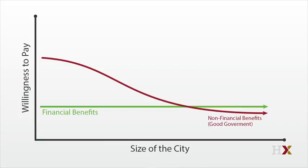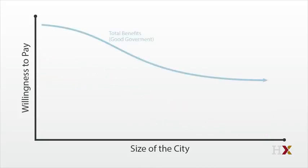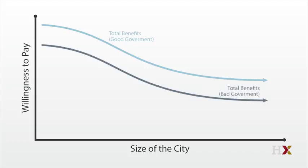So we can draw two lines for quality of life, both the same when population is low. But one line, reflecting the better governed city, falls less than the other as city population increases. Add these to the same fixed wage, and we get two demand curves — one in which demand falls slowly with city population, and the other in which demand falls quickly.